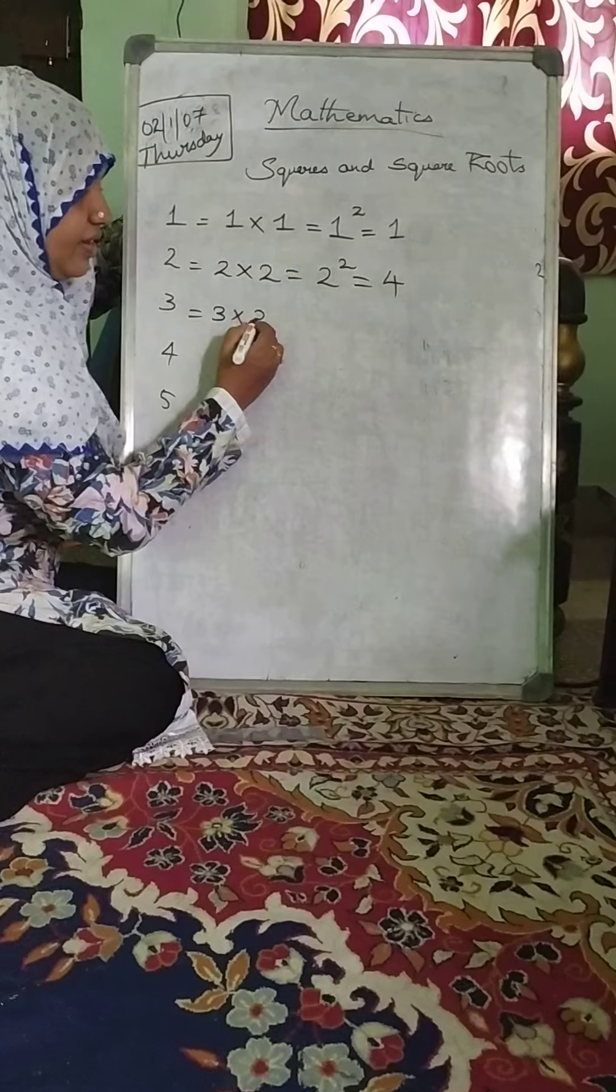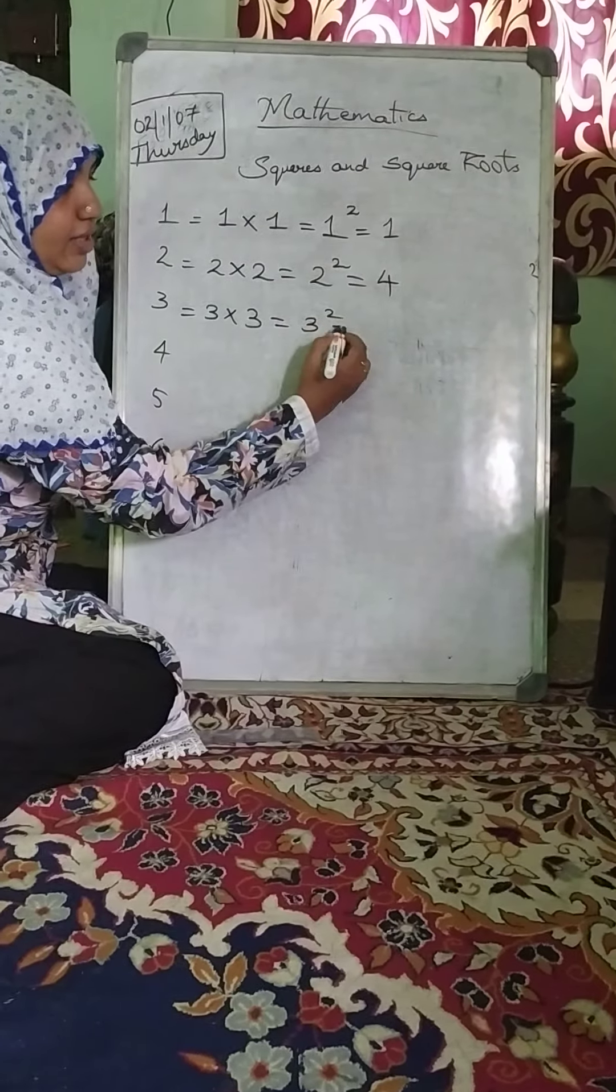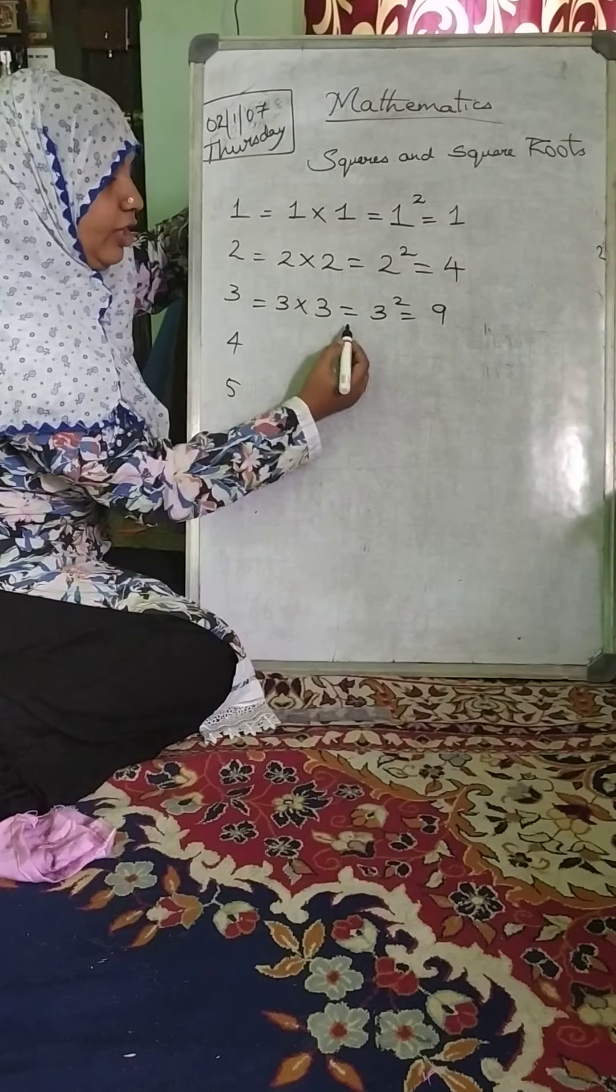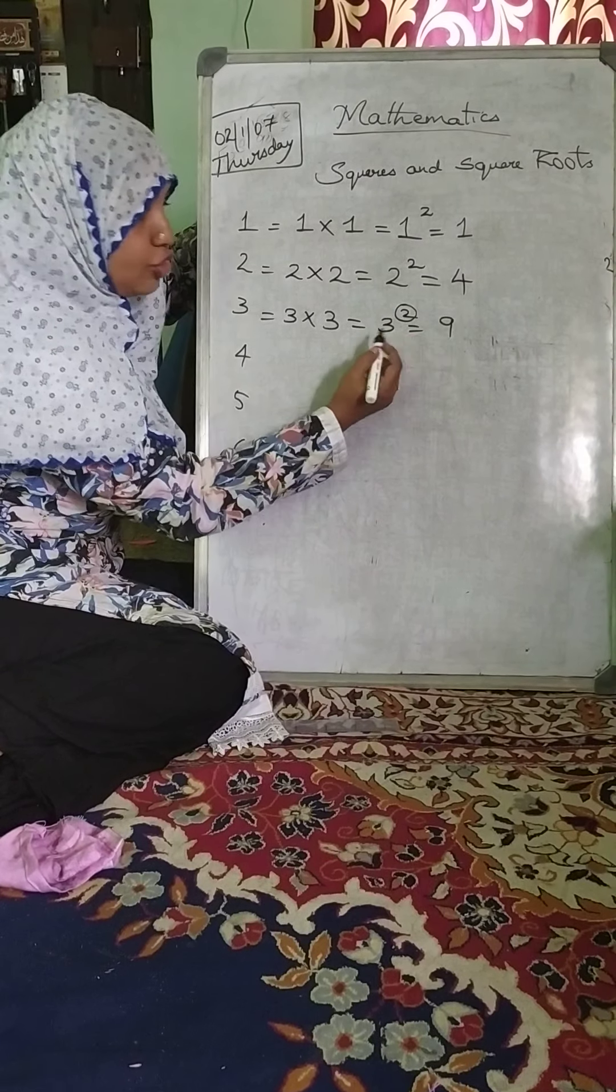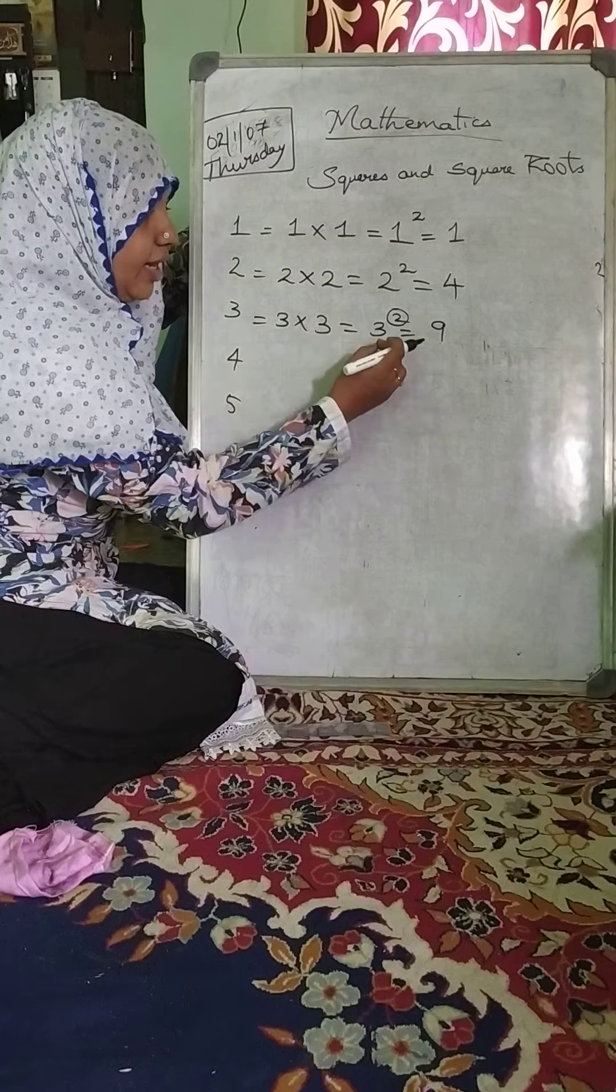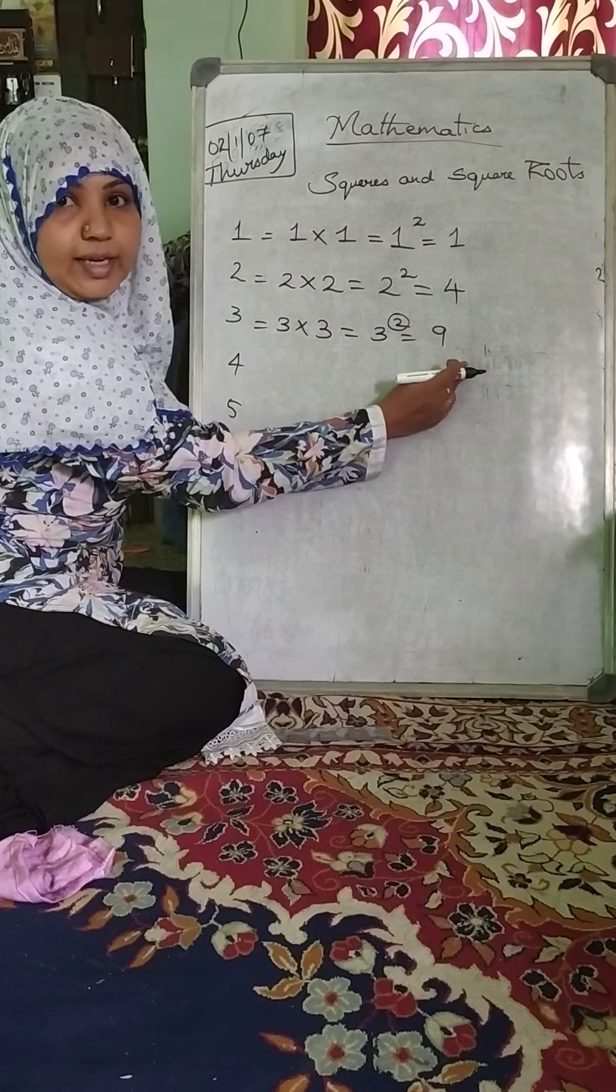When we do with 3, we write 3×3, 3 square is equal to 9. When you take 3×3=9, we write 3 square, 3 to the power 2. It is not 3×2, it is 3×3. 3 square means 3×3=9.